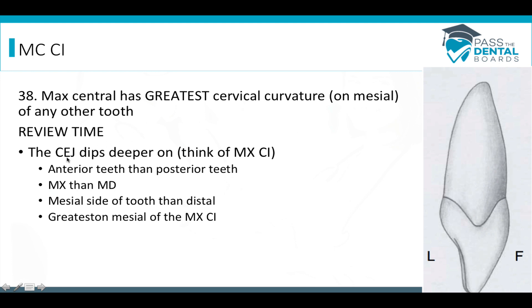Let's review the CEJ, because there are a lot of different ways they can ask questions about it. We'll use the maxillary central incisor as a model. The CEJ dips deeper on anterior teeth than posterior teeth, deeper on maxillary than mandibular teeth, and deeper on the mesial side than the distal. The maxillary central incisor has the greatest CEJ dip on the mesial.